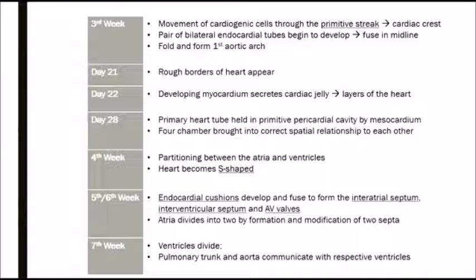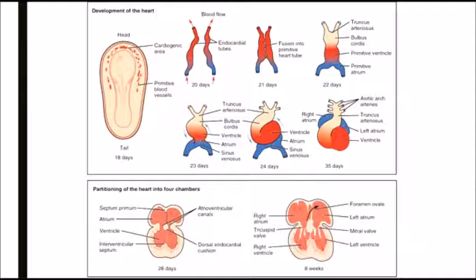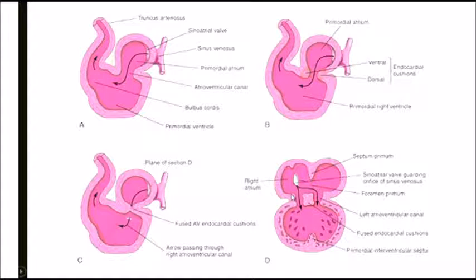In the fifth and sixth week is where you get really good differentiation between the heart chambers. You have endocardial cushions, which are pouches that form from the mesocardium and endocardial walls, and they form the interatrial septum, interventricular septum, and the atrioventricular valves and septae. In the seventh week, your ventricles divide, and your pulmonary artery and trunk communicate with their respective chambers. So essentially two tubes form in the midline, twisting into this S-shape, with 23 and 24 days here, and then this is your final product.